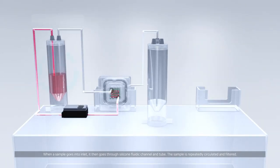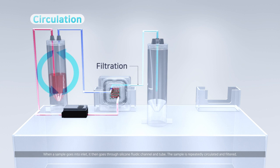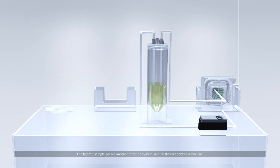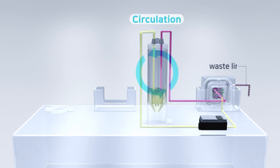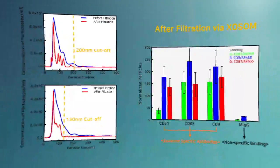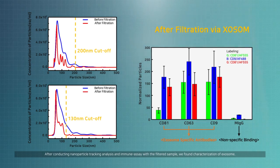When a sample goes into the inlet, it then goes through silicone fluidic channel and tube. The sample is repeatedly circulated and filtered. The filtered sample passes another filtration system and wastes are sent to the waste line.